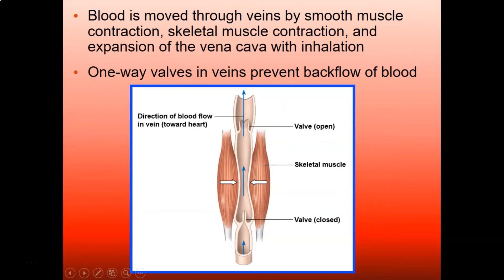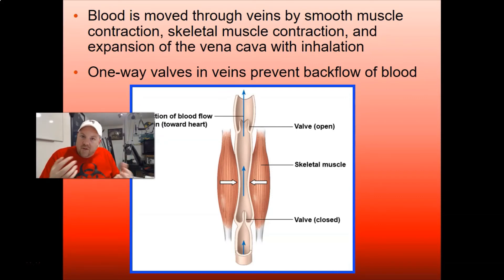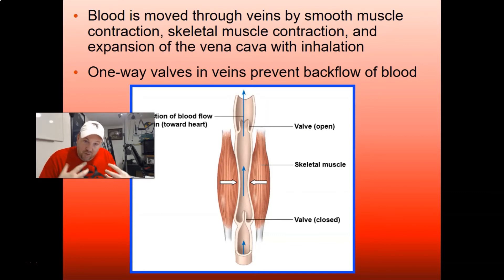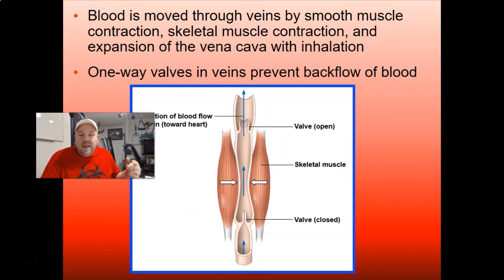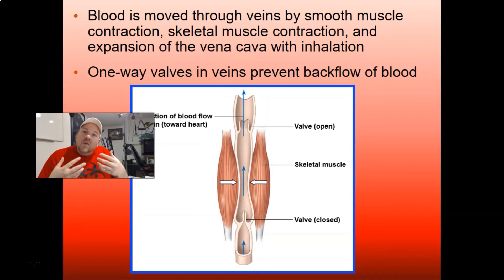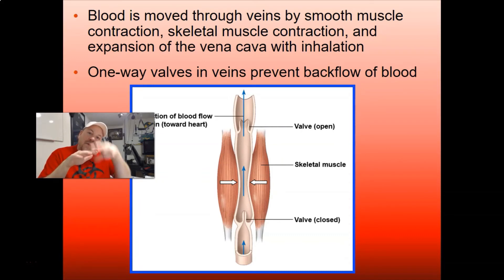Blood is moved through veins by smooth muscle contraction, skeletal muscle contraction, and expansion of the vena cava with inhalation. Your veins don't have a huge muscle layer, but your skeletal muscles all day long are actually forcing blood back to your heart. Your vena cava as it oscillates is also sucking the blood back — like a negative pressure pulling blood back to the heart. Because veins have lost all that pressure at the capillary bed, you need one-way valves to prevent backflow, and these valves can go bad.